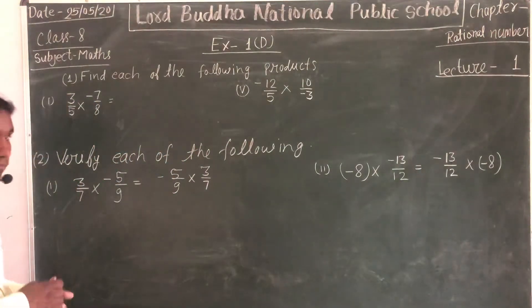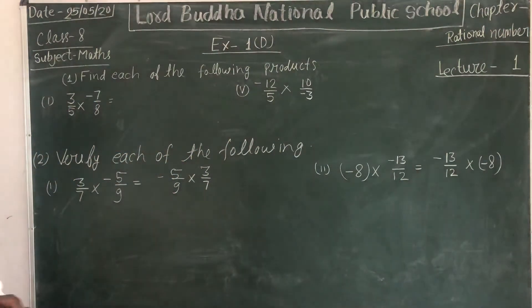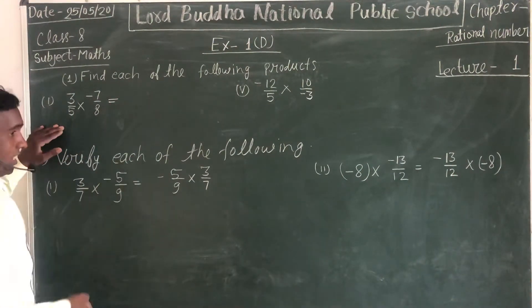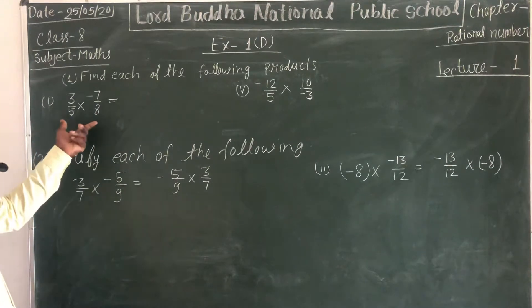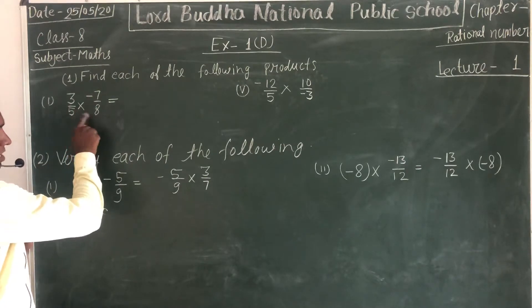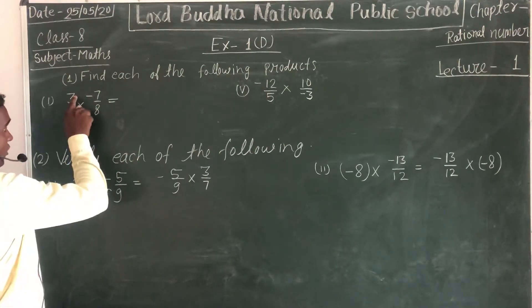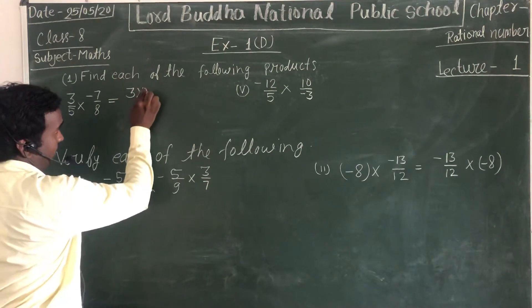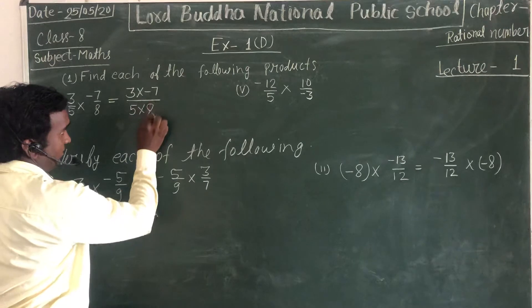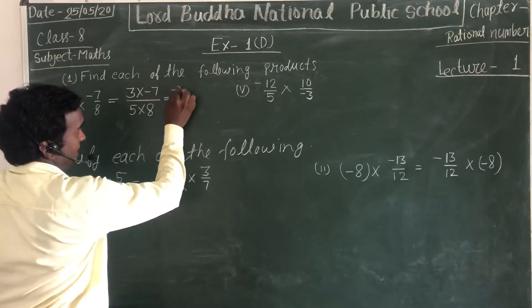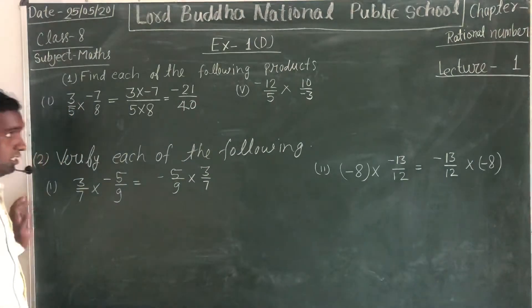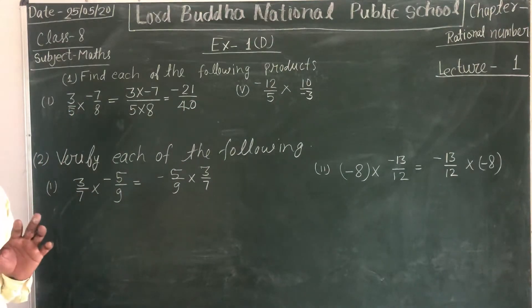When we multiply two rational numbers, numerator is multiplied with numerator and denominator is multiplied with denominator. So, 3/5 multiplied by -7/8: 3 times 7 is 21, 5 times 8 is 40. The answer is -21/40.